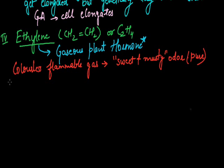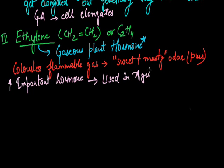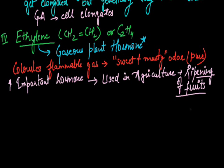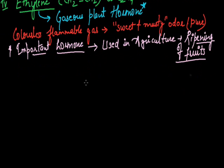It is an important hormone, ethylene, which is used in agriculture for ripening of fruits. So the most important function of ethylene is it induces the ripening effect. Now we can see the functions of ethylene.